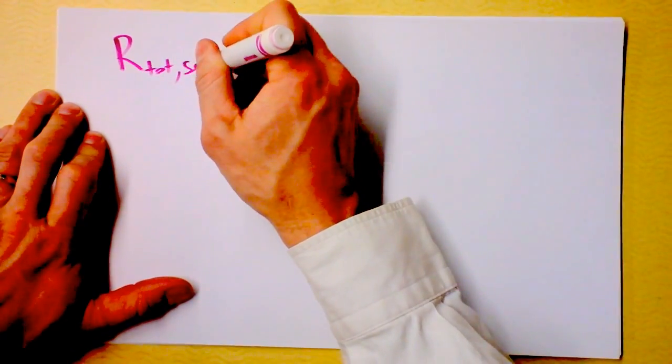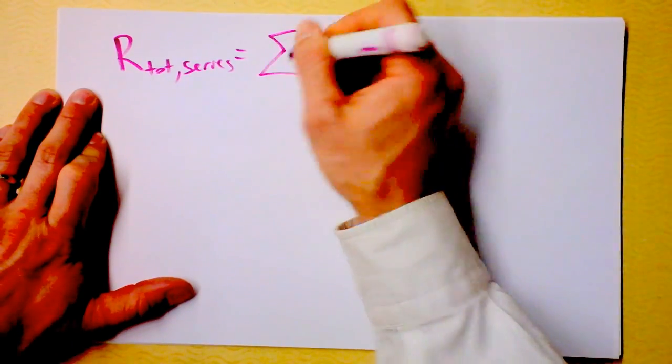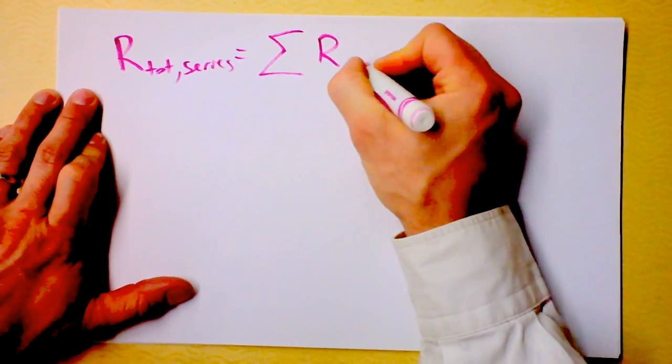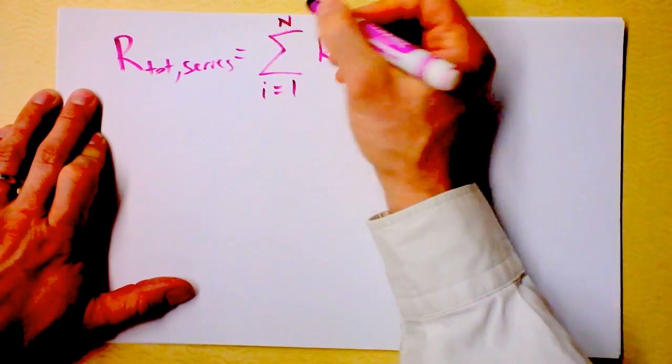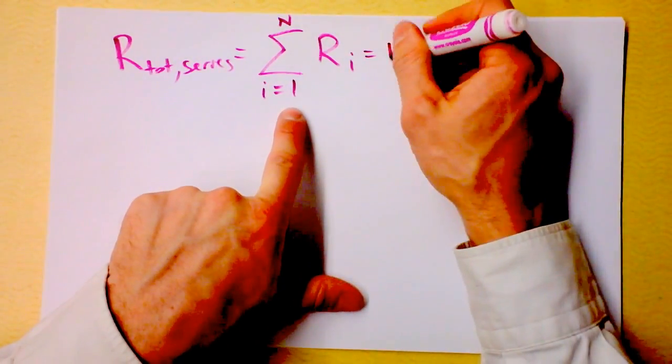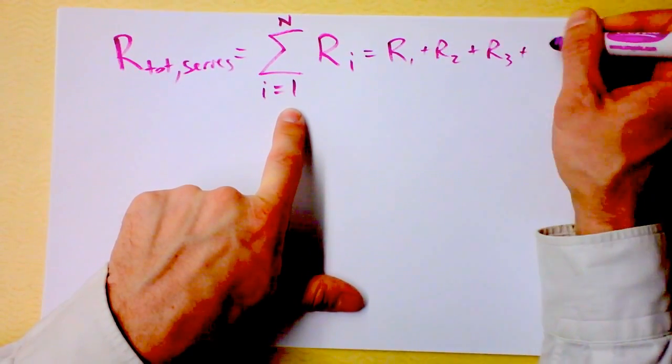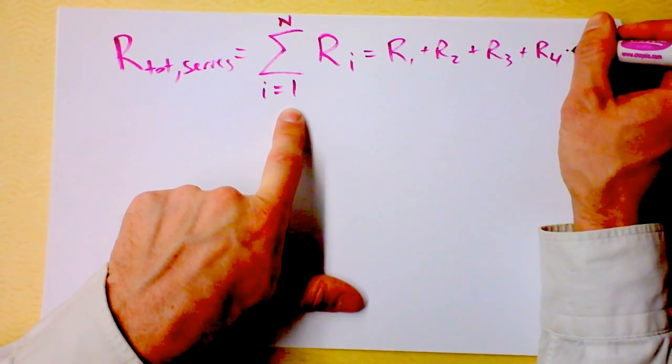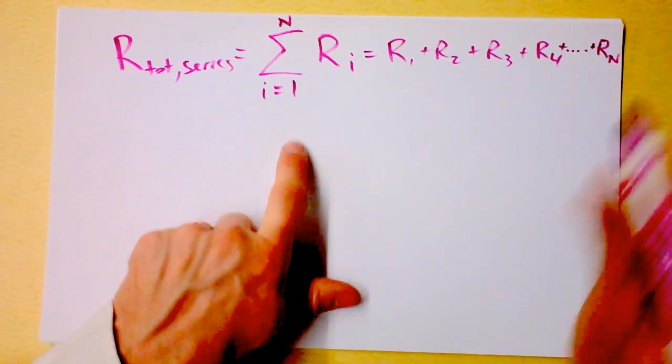R total series equals the sum of all the resistances. And we've got to start from the first resistance and go up to the nth resistor. If you've got n resistors in series, that means you're going to have R1 plus R2 plus R3 plus R4. And you're going to go on and on and on, adding up until you get to R sub n. Cool?